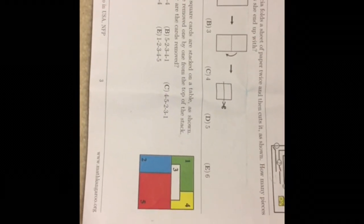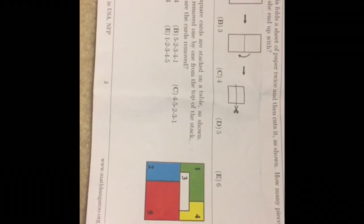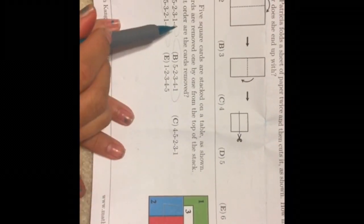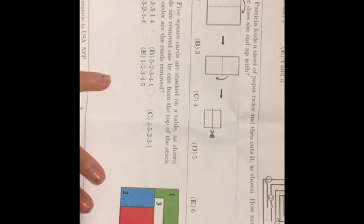Problem number eleven: five square cards are stacked on a table and removed one by one from the top. Card five is first removed because it's a full square, leaving options A, B, and D. Next must be card two, giving options A and B. Since card one appears as a full-width square on top of card four, the order is 5, 2, 1, 4, 3 — the answer is A.